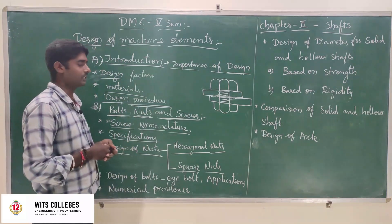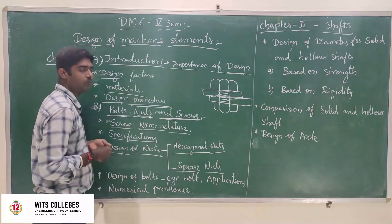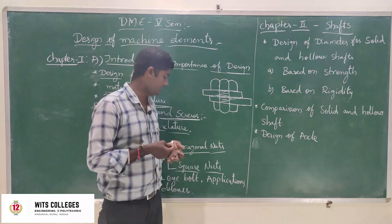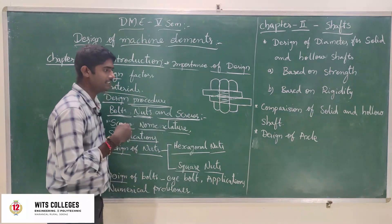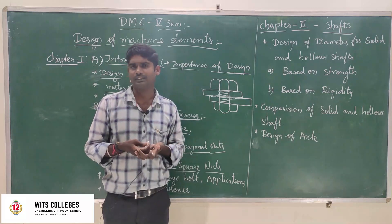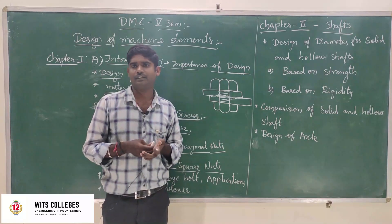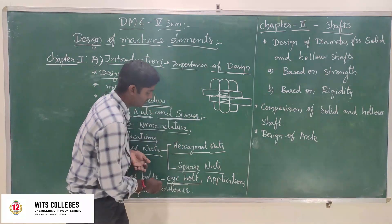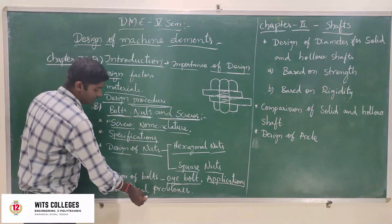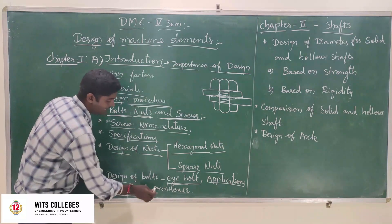Next, coming to the design of bolts. We completed screws, and now larger bolts. In the design of bolts: what are the specifications, what are the considerations, how to design. In this chapter, one important bolt is the eye-bolt, used for lifting purposes — in motors for lifting. Using eye-bolts and nut screws, we go for the numerical problems.